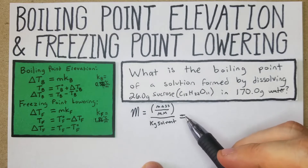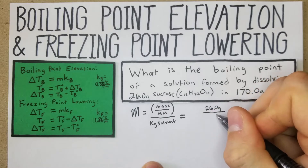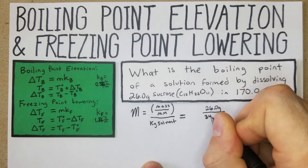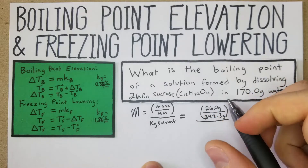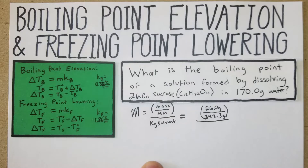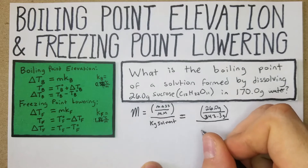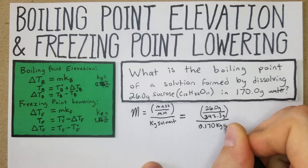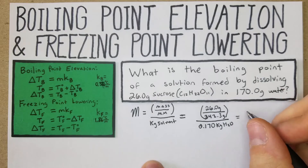We're given the mass — 26 grams of sucrose — over our molar mass of sucrose, which is 342.3 grams. Divided by kilograms of solvent: we have 170 grams of water, which we convert to 0.170 kg of water. We do that math: 26 divided by 342.3, all divided by 0.170.